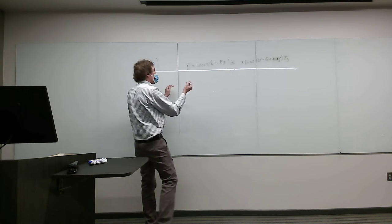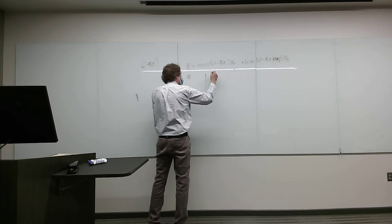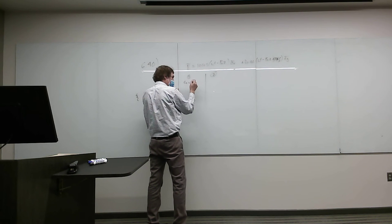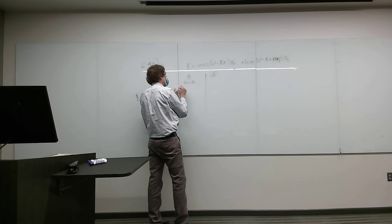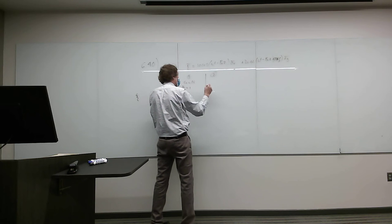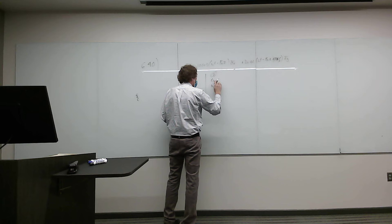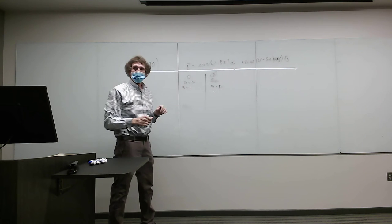Epsilon-R in medium 1 is equal to 16. This is medium 1 and medium 2. Medium 1 epsilon relative is 16, and it is non-magnetic, so mu relative here is 1, and mu relative in medium 2 is also 1. The second medium is magnetic: mu-R is 12, and epsilon-R is equal to 6.